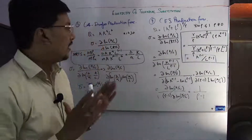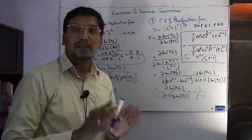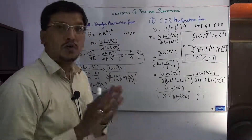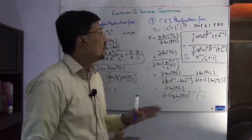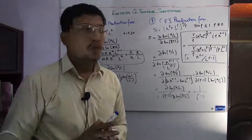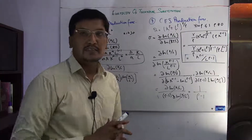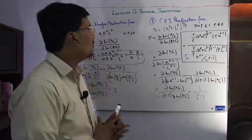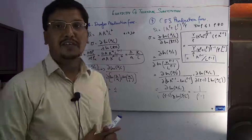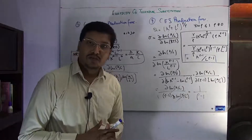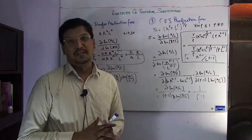So the elasticity of technical substitution for the CES production function is 1/(1−ρ). I hope you learned about it. Please subscribe to our channel and watch our videos. Thank you.